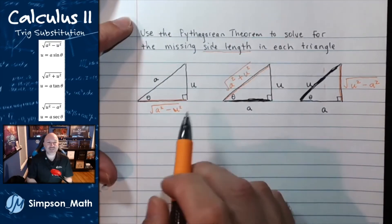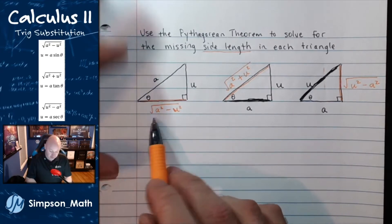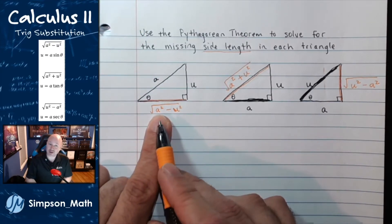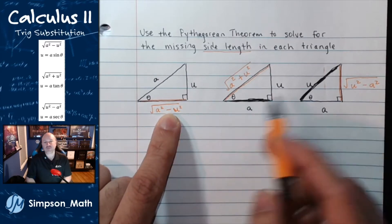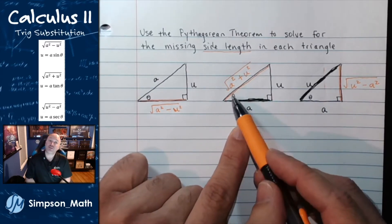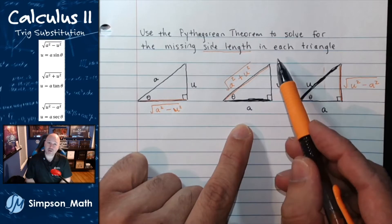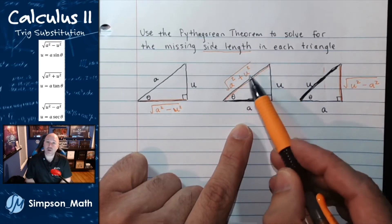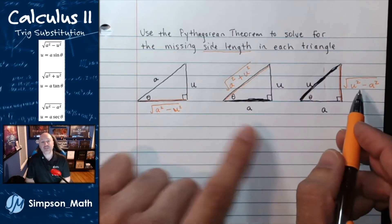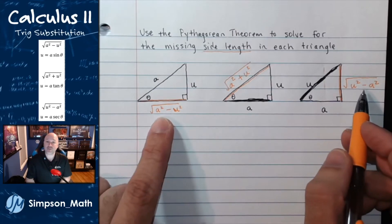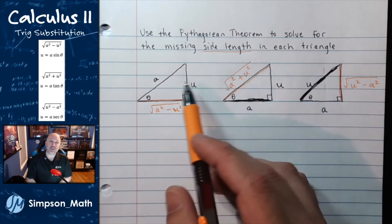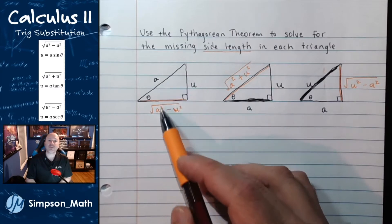Hopefully you came up with, in the first triangle, the square root of a squared minus u squared as the hypotenuse. In the second one, because you were looking for the hypotenuse, you should have found a sum under the radical. And in the third triangle, it's a lot like the first, where you have a difference, and that hypotenuse is written first.